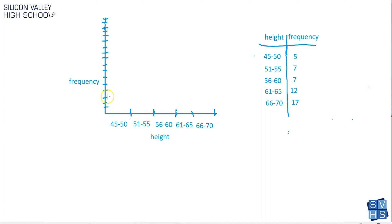So we're going to come up here, one, two, three, four, five, and draw a bar, right? At exactly, we found that we had five occurrences of a height in this range.